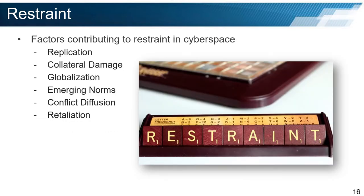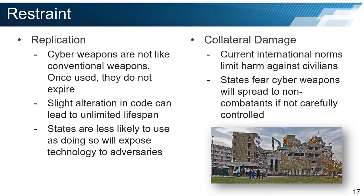There are a number of factors that contribute to the use of restraint by rational actors. These include replication, collateral damage, globalization, emerging norms, conflict diffusion, and retaliation. One of the key factors is replication — the danger that if a state makes use of a cyber tool, it will be copied and re-engineered. We have seen this to some extent with the Stuxnet worm, which appears to have been the basis for several follow-on tools; some were likely re-engineered variants by other states utilizing the modular framework to deliver other effects.